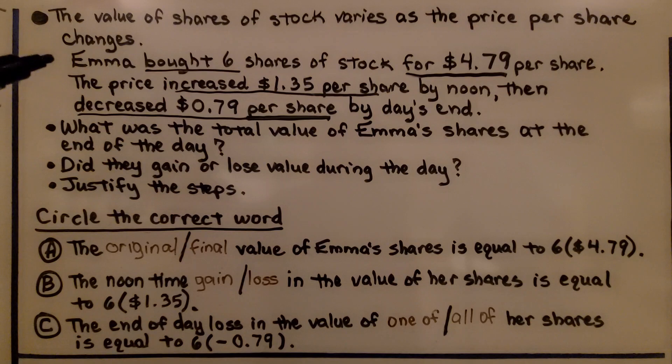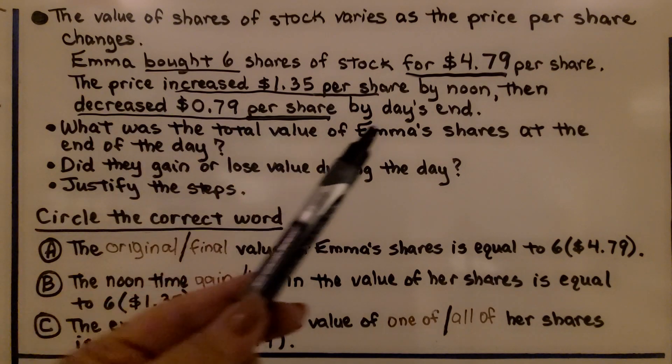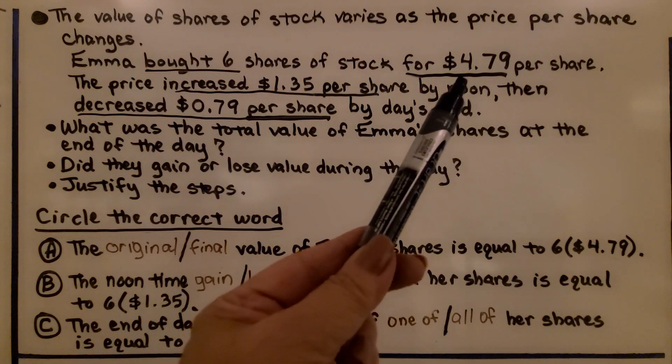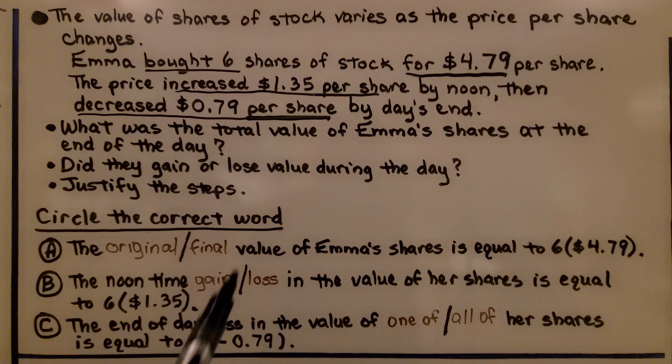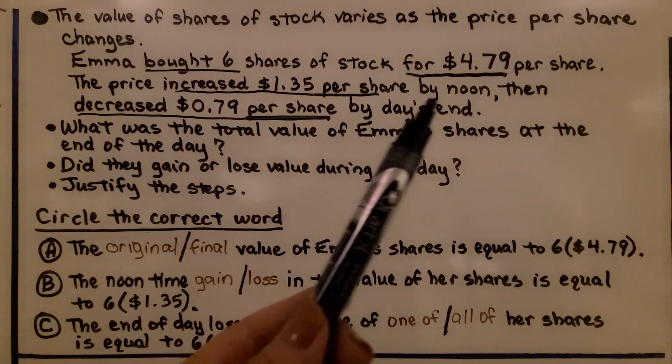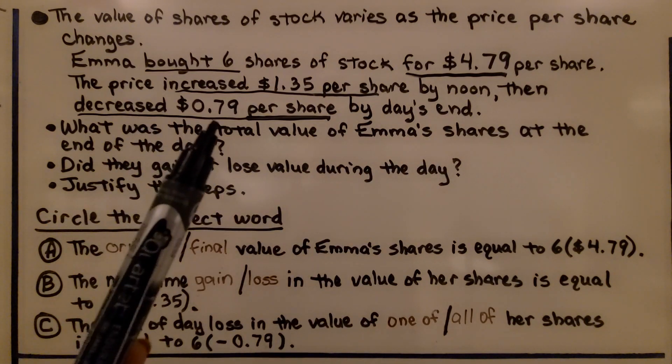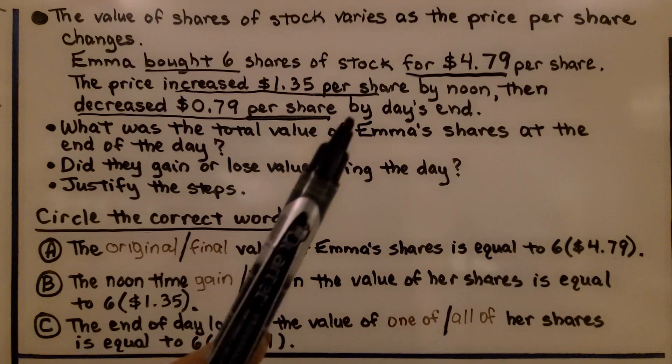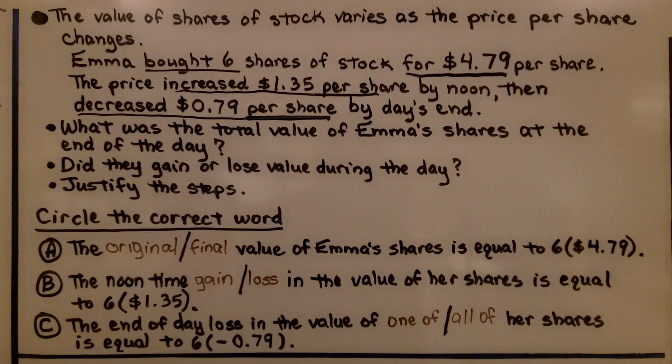It says Emma bought 6 shares of stock for $4.79 per share. The price increased $1.35 per share by noon, then decreased $0.79 per share by day's end. It wants to know what was the total value of Emma's shares at the end of the day. It also wants to know did they gain or lose value during the day, and we need to justify the steps. And it says circle the correct word.